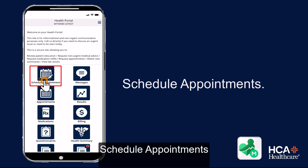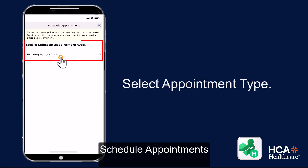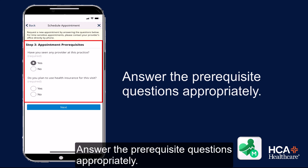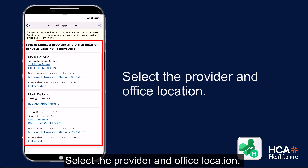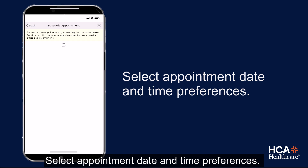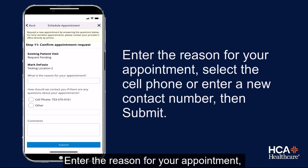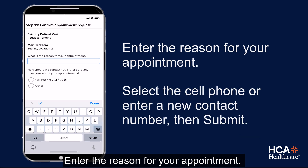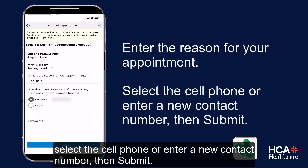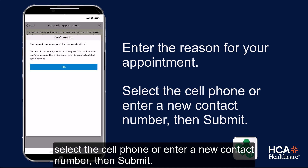To schedule appointments, select the appointment type and answer the prerequisite questions appropriately. Select the provider and office location, then select appointment date and time preferences. Enter the reason for your appointment, select the cell phone or enter a new contact number, then submit.